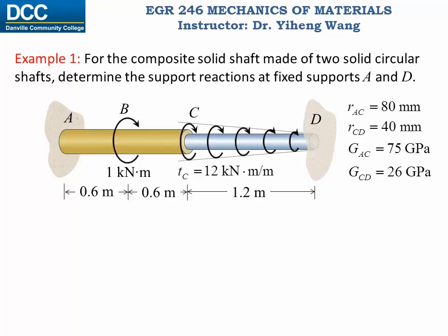In this example, a composite shaft is made of two solid circular shafts with different geometric and material properties. It is subjected to a concentrated torque of 1 kNm at point B, as well as a distributed torque that ranges from point C to point D. We need to determine the support reactions at the fixed supports at point A and point D.